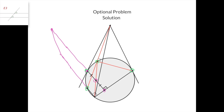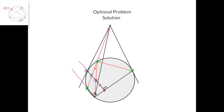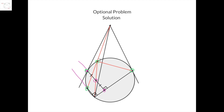Therefore, the only possibility is that the two lines are parallel, meaning that this angle is 90 because this angle here is 90. And finally, from this cyclic quadrilateral, it follows that since this angle is 90, then this angle equals 90 degrees, as desired.